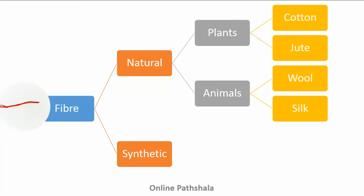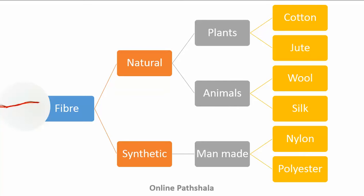The next category is synthetic fibres. For the last 100 years or so, fibres are made from man-made substances with the use of chemicals, which are not obtained from plant or animal sources. These are known as synthetic fibres. Some common examples of synthetic fibres are polyester, nylon and acrylic.